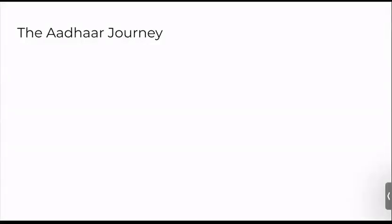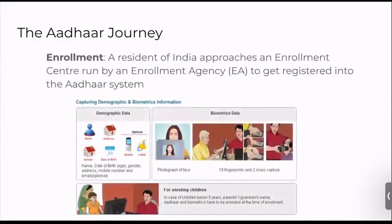Let's look at the journey of a single individual's information throughout the Aadhaar ecosystem. The first step is enrollment. A resident of India, Anita, approaches an enrollment center to get registered into the Aadhaar system. Anita fills her personal details in the enrollment form and submits it to an enrollment officer. The enrollment officer uses the enrollment client software to record her biometrics — a picture of her face, iris scan, and fingerprints — along with the demographic details.